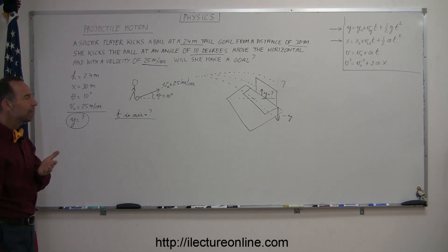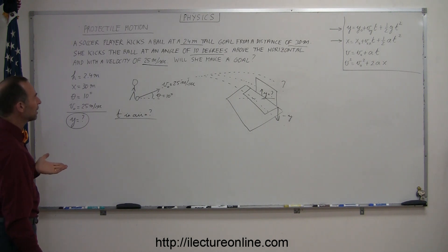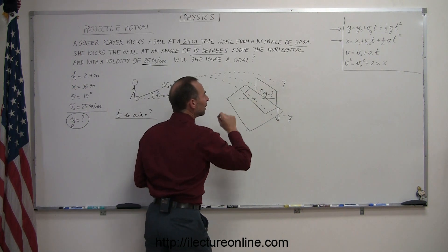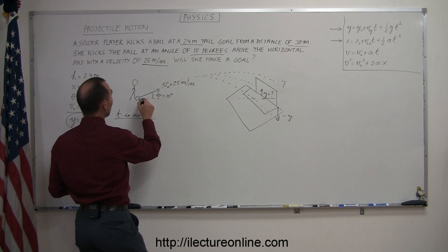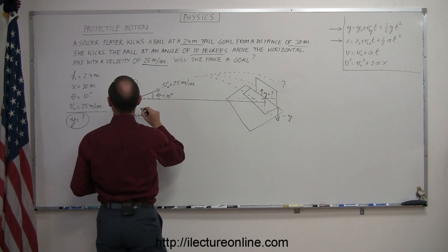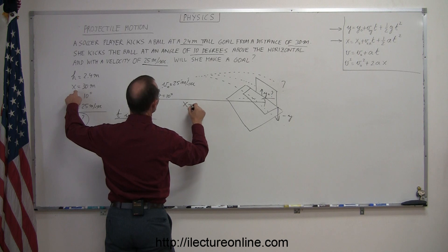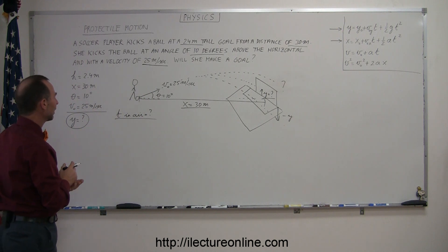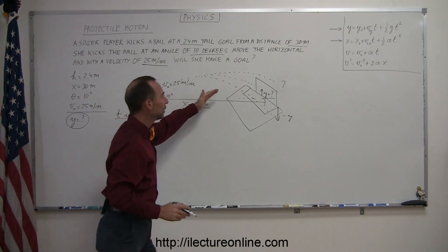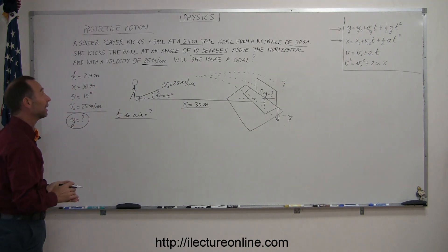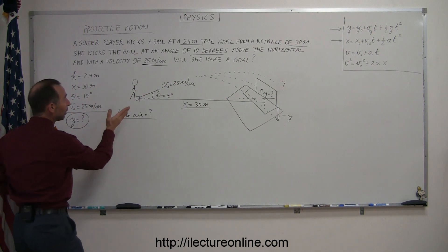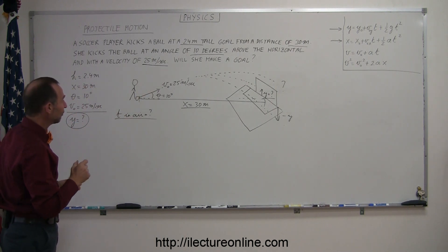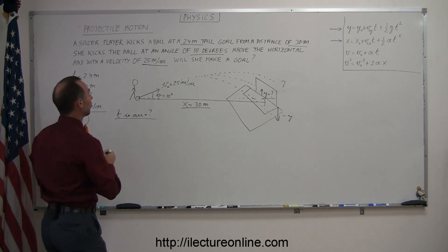We can't really use the vertical component of the velocity to figure out time in the air, because we don't know how high the ball will be when it reaches the goal. But we do know how far the ball has to go — x is equal to 30 meters. So instead of using the vertical component, let's use the horizontal component and figure out how long it takes the ball to travel 30 meters. Since the ball is kicked at an angle, we need to find the vertical and horizontal components of the initial velocity.